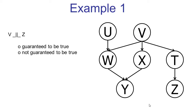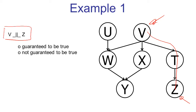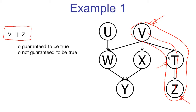Let's look at some examples. First exercise: we're asked to check whether v is independent of z with no evidence. There is one path connecting v and z. This one path consists of just one triple, which is a causal chain with the middle node unobserved. That means the triple is active, which means all triples along the path are active, which means the path is active. Once we have found an active path, we know that just based on the graph structure, we cannot guarantee the independence. So v independent of z is not guaranteed to be true.